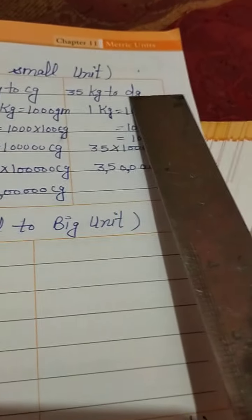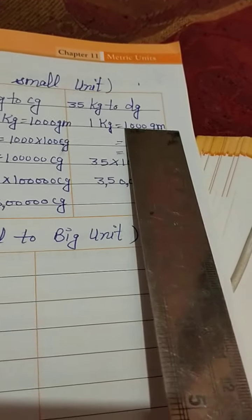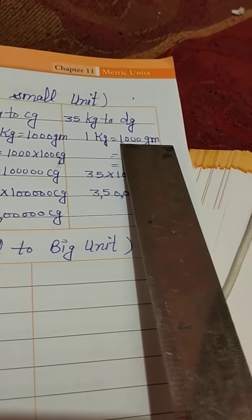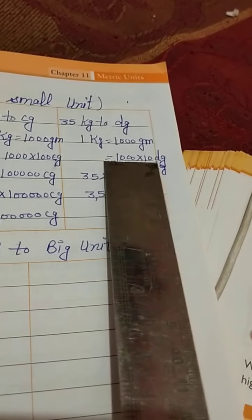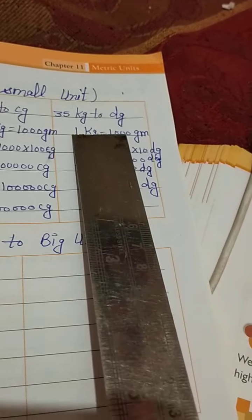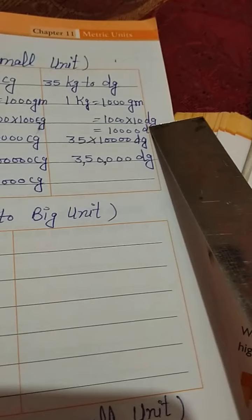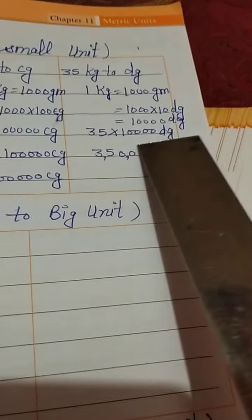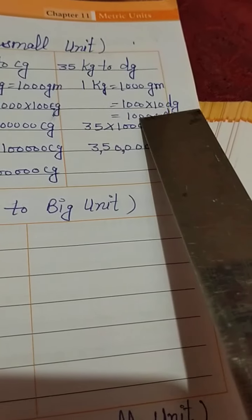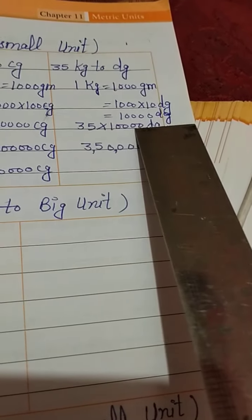dg means decigram. We know 1 gram is equal to 10 decigrams. So 1 kg is equal to 1,000 grams; in place of grams we write 1,000 multiplied by 10 dg. We are getting four zeros, and 1 multiplied by 1 is equal to 1. So 1 kilogram is equal to 10,000 dg.